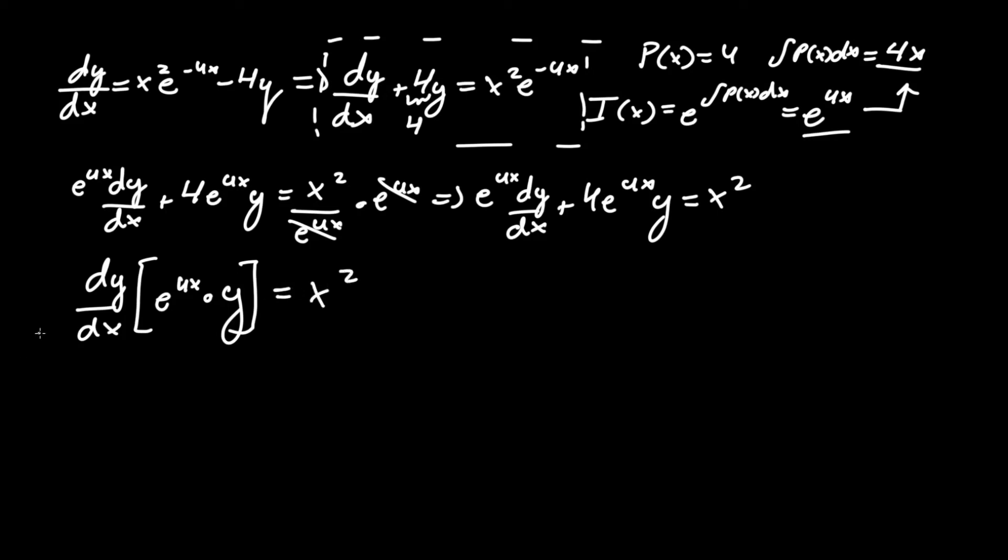Now, if we integrate both sides, the integral of a derivative just cancels out, and we'll be able to isolate our y in the next step. However, the right hand side is also integrated. So, this equals simply e to the 4x times y, since we got rid of the derivative with the integral.